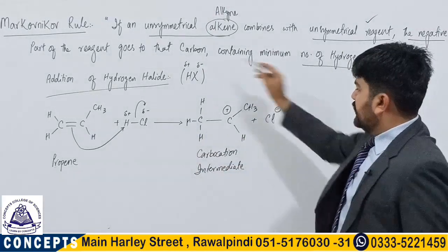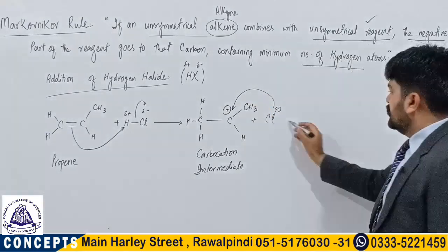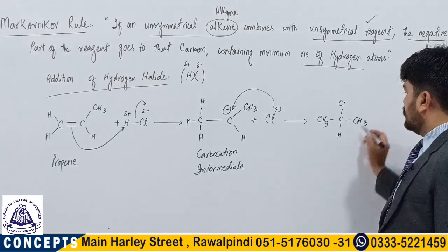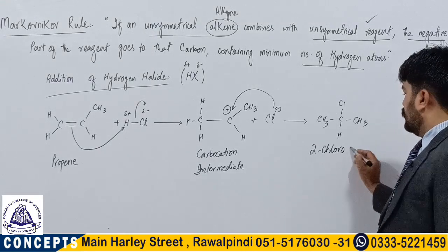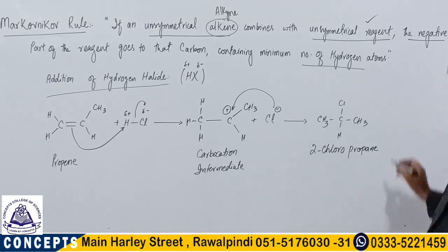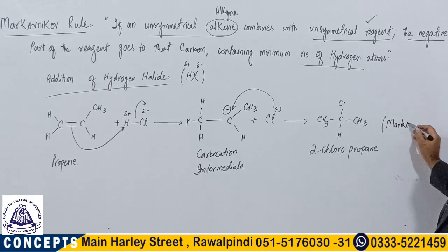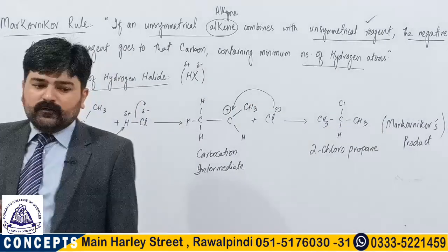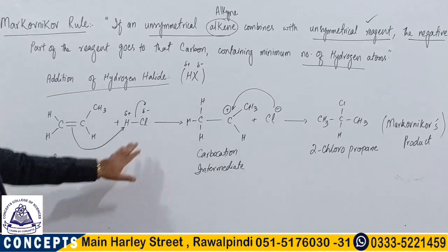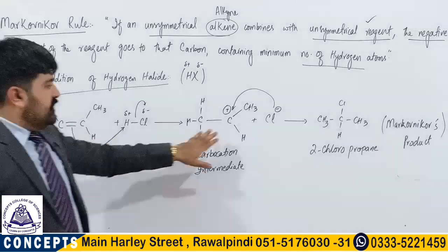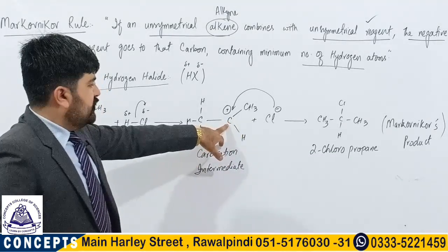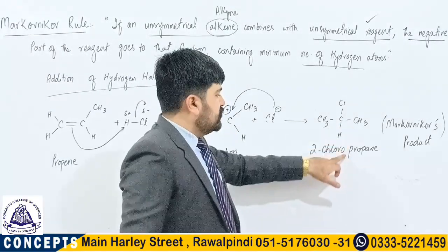With the help of the definition we can easily find out where to attach this hydrogen. The definition clearly says that the negative part of the reagent goes to that carbon containing the minimum number of hydrogen atoms. So this carbon does not allow hydrogen to attach itself to it and shifts hydrogen to the other side where the carbon has two further hydrogens. This hydrogen, when attached to the right carbon, results in a carbocation intermediate. The central carbon lacks one bond so it bears a positive charge. In the second step the negative chloride ion attaches to this carbon, giving us CH3-CHCl-CH3, which is 2-chloropropane. This 2-chloropropane is known as the Markovnikov product.